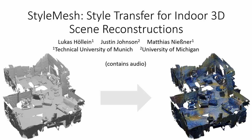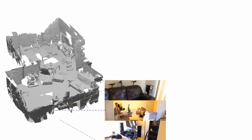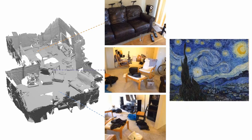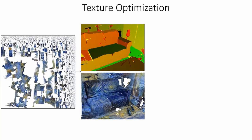We present StyleMesh, style transfer for indoor 3D scene reconstructions. Given a mesh of an indoor scene reconstruction and the input RGB images, we want to optimize for a texture for the scene that combines the color information with those of an artistic painting.